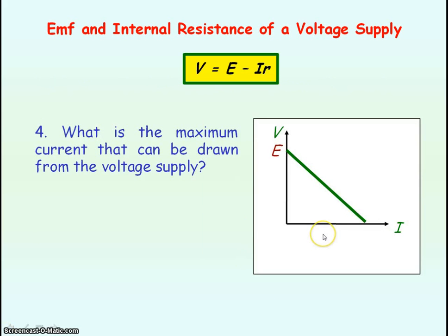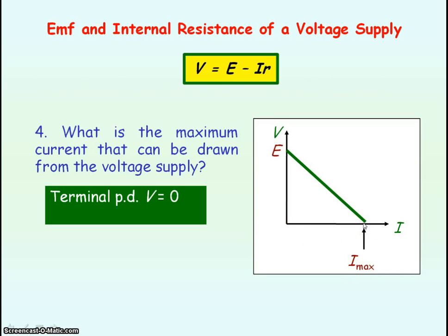There is a maximum current that can be drawn from the voltage supply, and that occurs when the terminal PD, our output voltage, is equal to zero. We can rearrange this equation to make I the subject, so I_max will equal our EMF divided by the internal resistance.